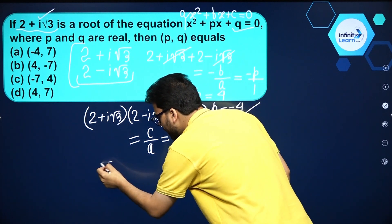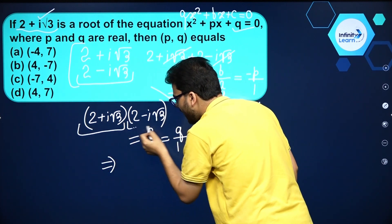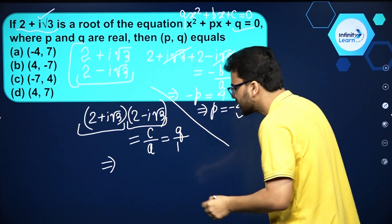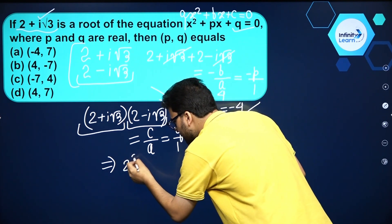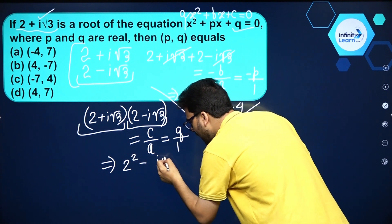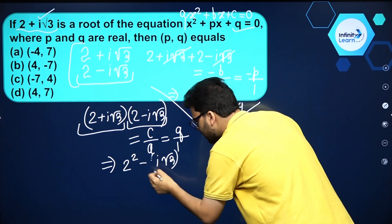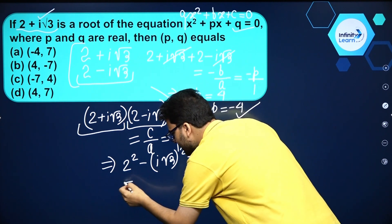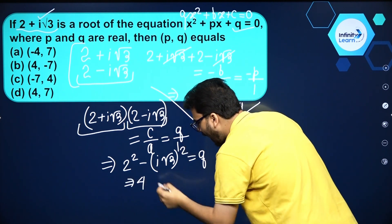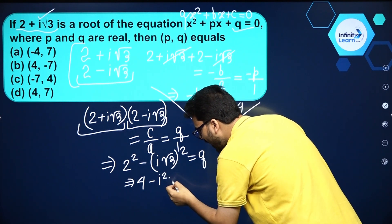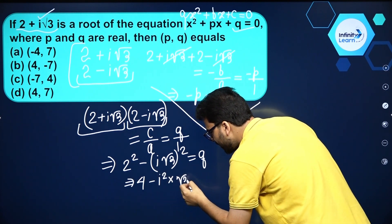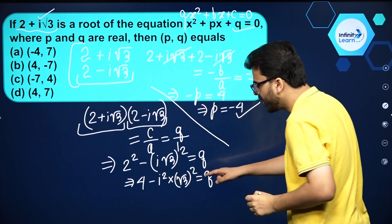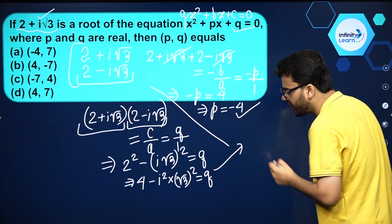Multiplying these, we see they are of the form (a + b)(a - b), which equals a² - b². Using this identity, we get 2² - (i√3)², which equals q. This is 4 minus i² times (√3)², and that equals q.